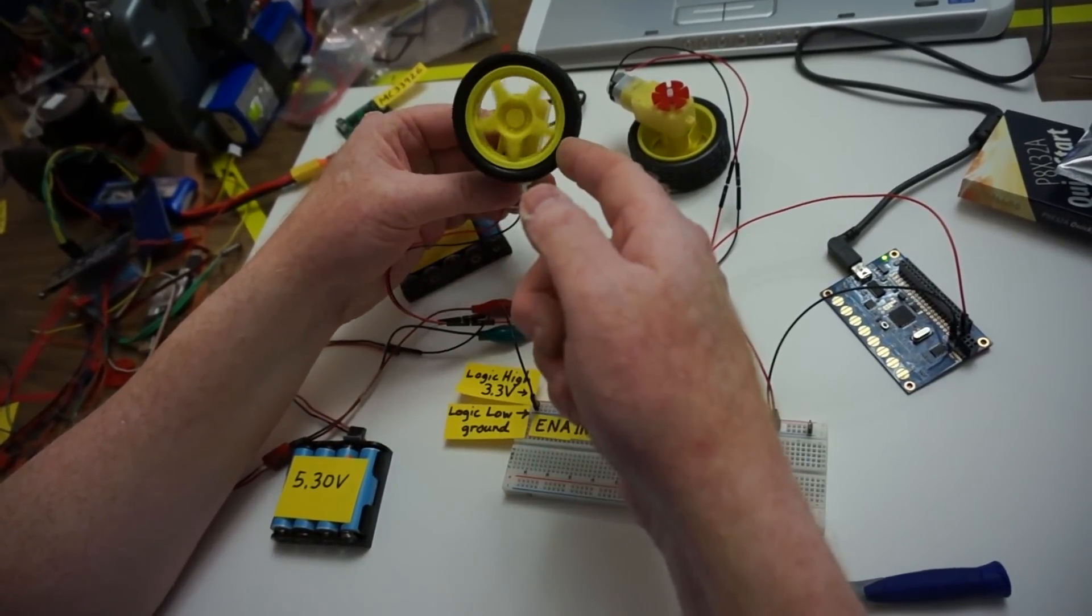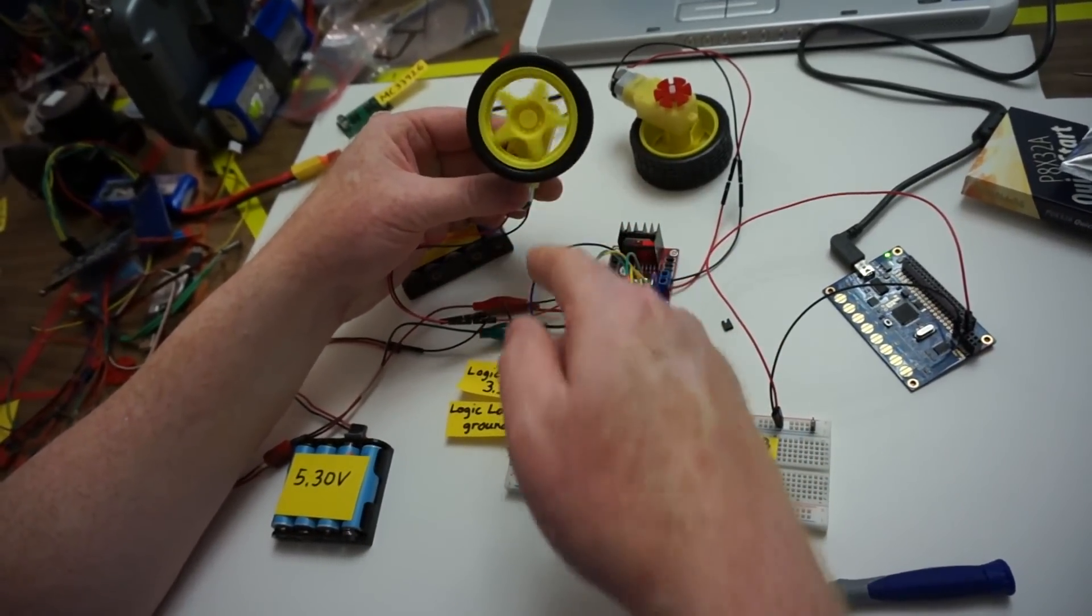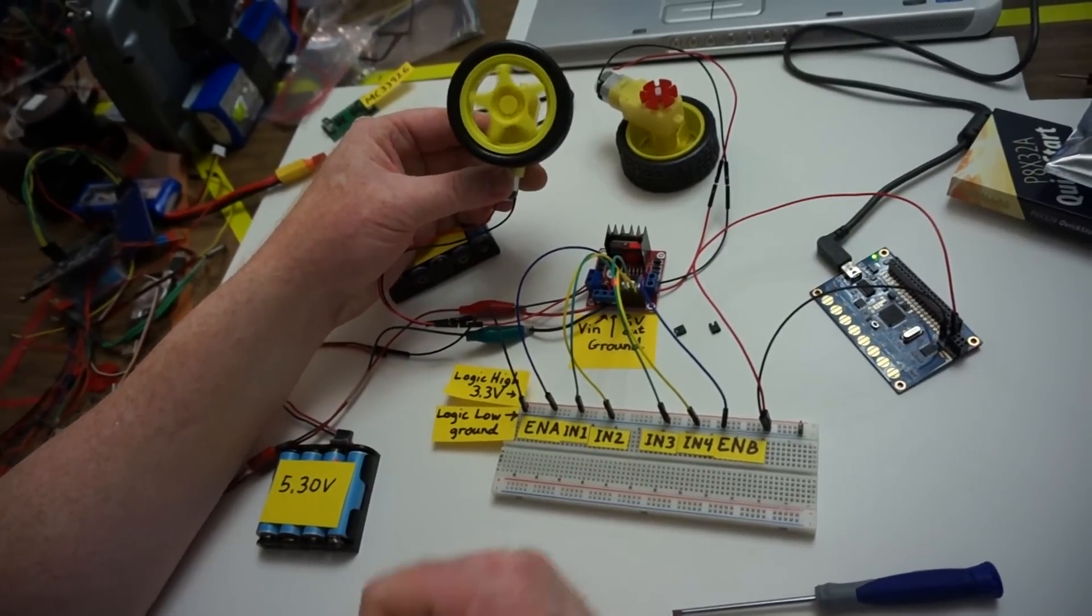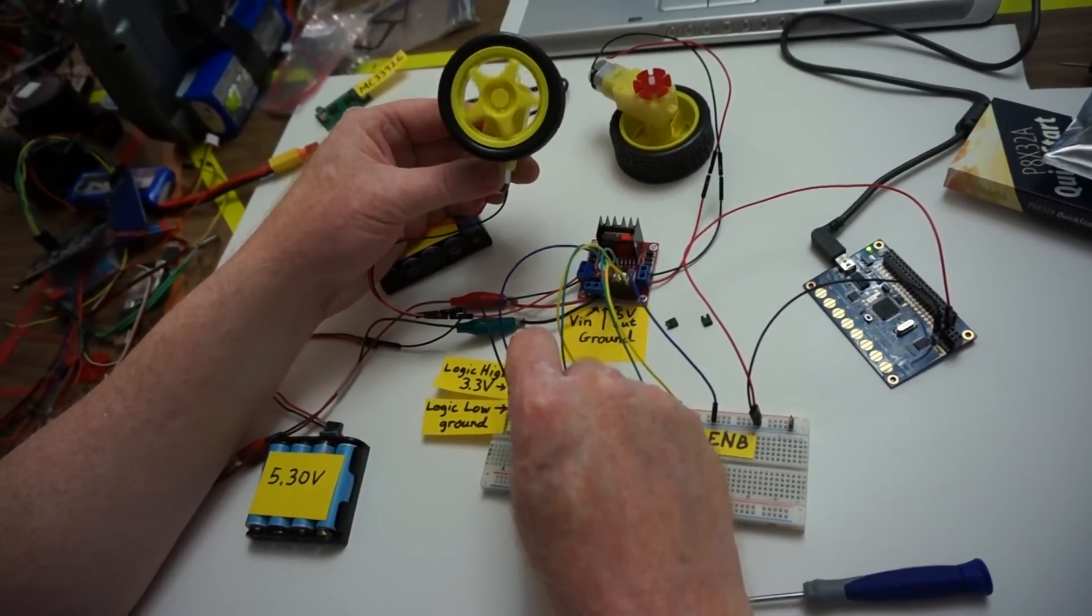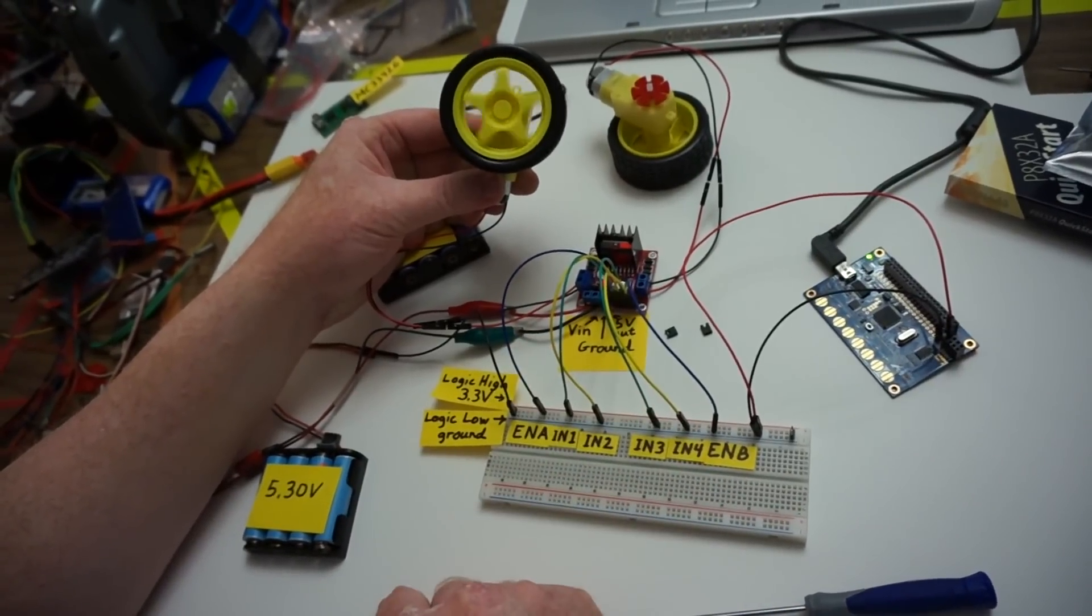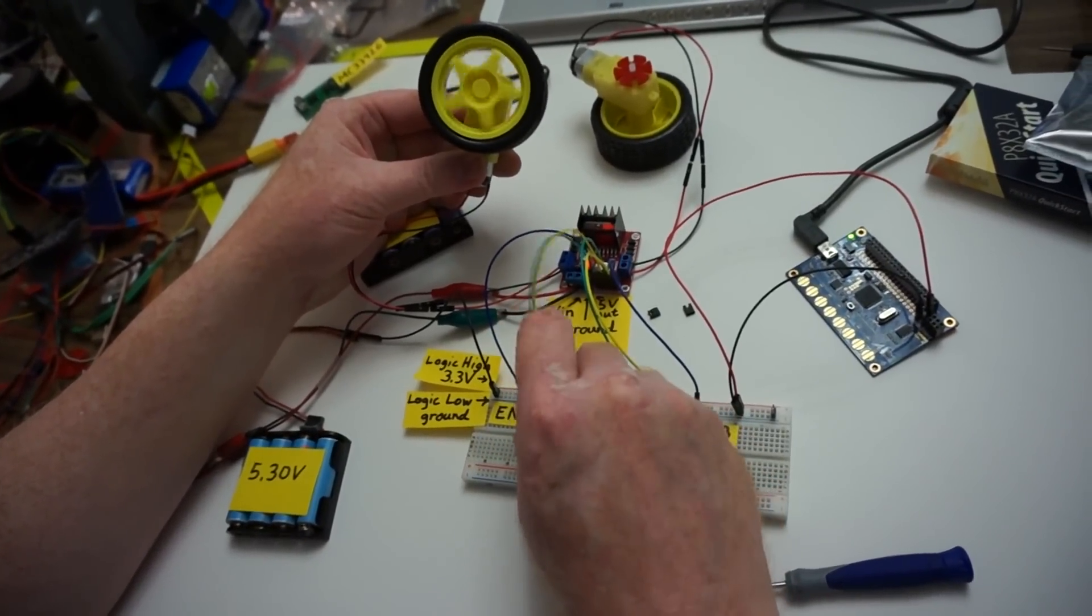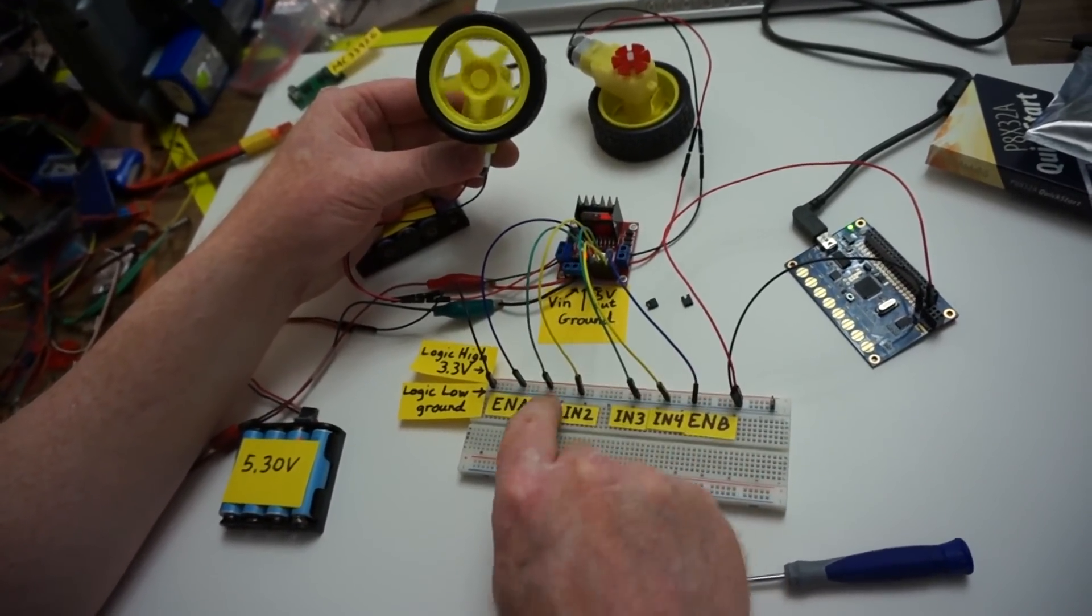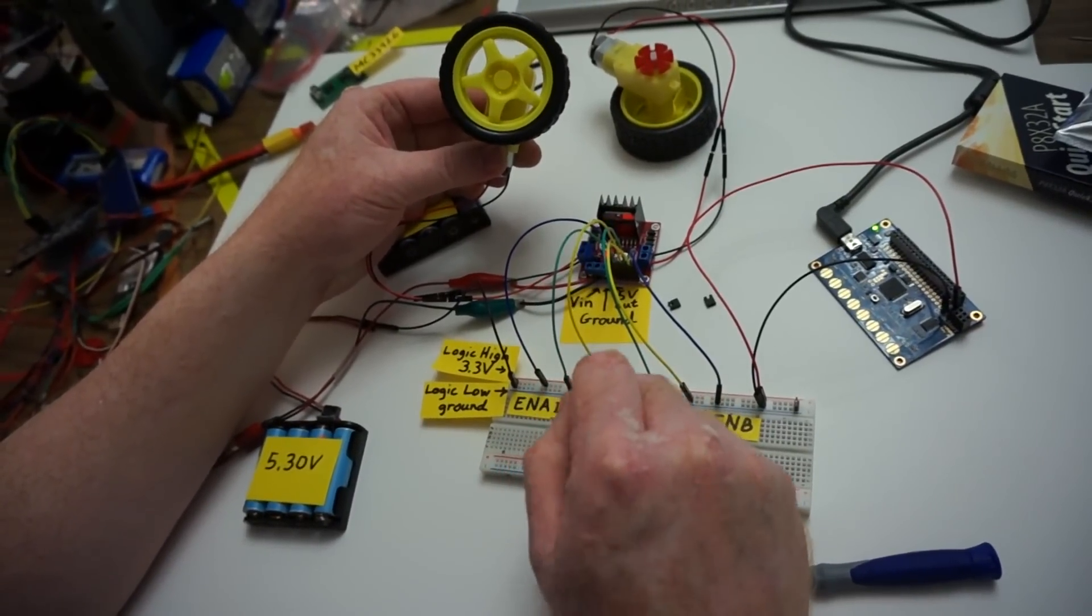Okay, and this motor happens to turn counter clockwise in the positive direction. Okay, we can switch, we can turn it off by bringing the enable pin low on again high. Now we can switch directions. If we bring this enable pin, this input pin low, it will stop.